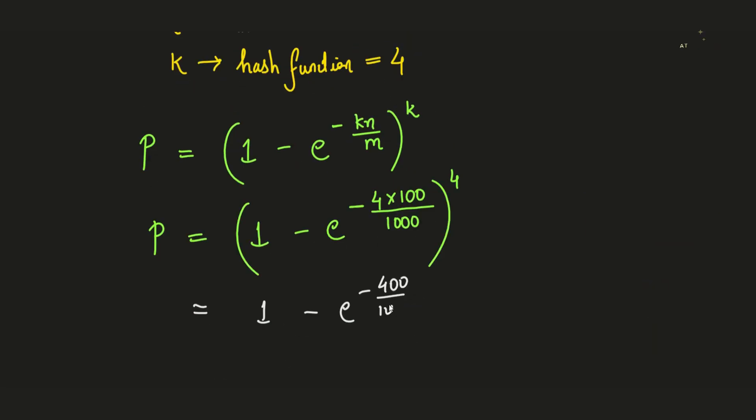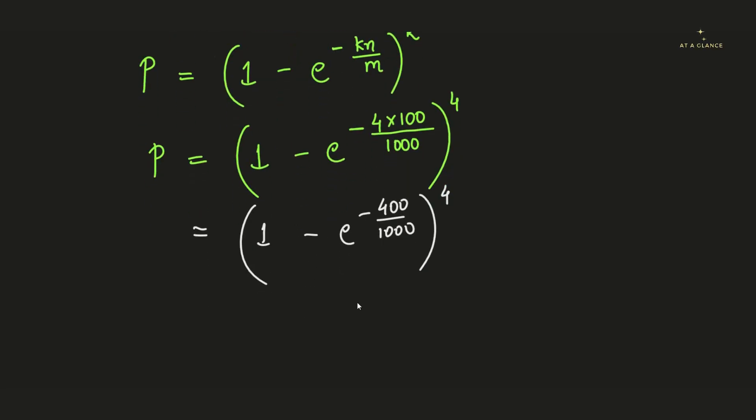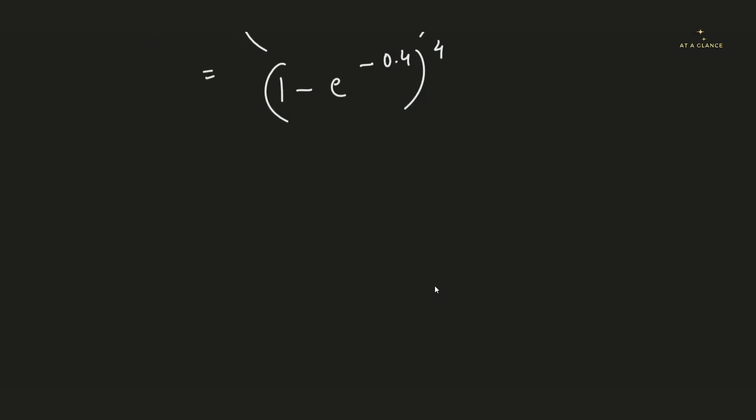and then comes 1000, and this whole is raised to 4. Now we can boil this down to (1 - e^(-0.4))^4. You can use a scientific calculator and plug in all these values and you will get the answer. The final answer that you get after solving the entire expression is 0.0118.